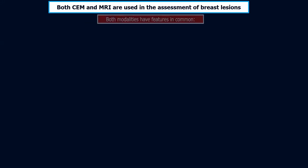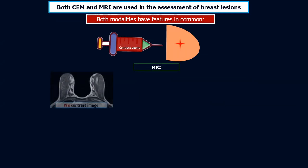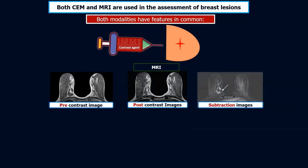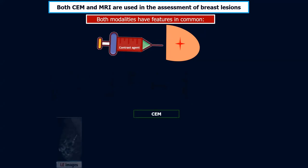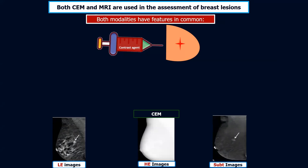Both contrast mammography and MRI are used in the assessment of breast lesions, and both modalities have features in common. In both, we inject contrast agent to highlight areas of concern within the breast. In MRI, we do pre-contrast and post-contrast images to get a subtracted image highlighting the area of concern. In contrast mammography, both images are taken post-contrast — the low energy image and the high energy image — and they are subtracted to get the recombined image with the lesion evident within a totally subtracted parenchyma.